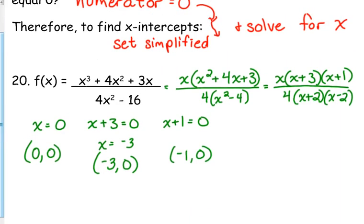Okay, y-intercepts, same principle, plug in 0 for x. In this case, when we plug in 0 for x, that numerator is going to be 0, and the denominator is going to be negative 16, so that is 0.